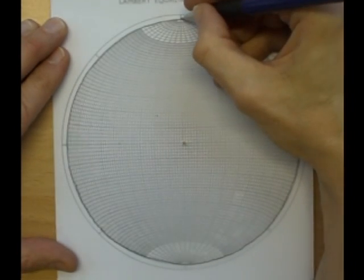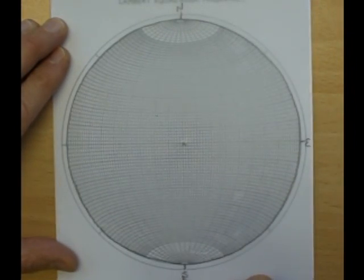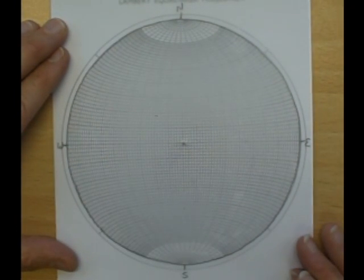There we go, and we mark on North, East, South and West. And our StereoNet is ready for plotting.